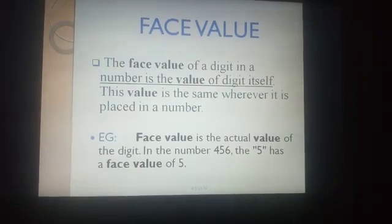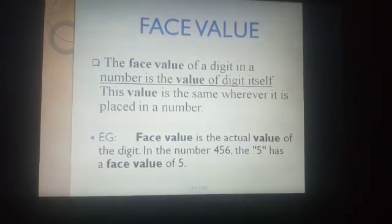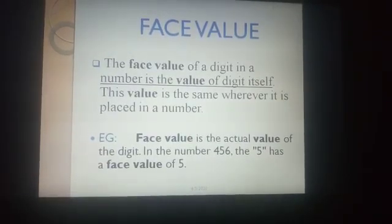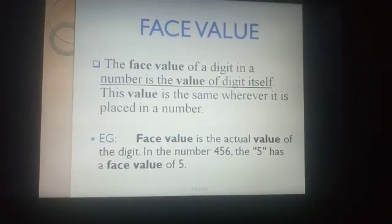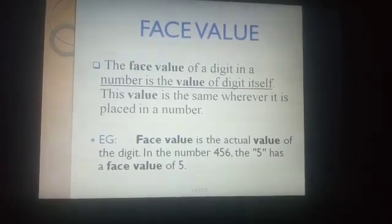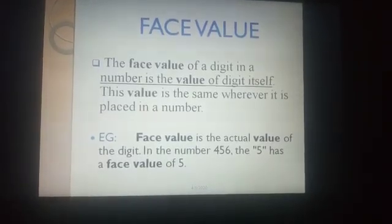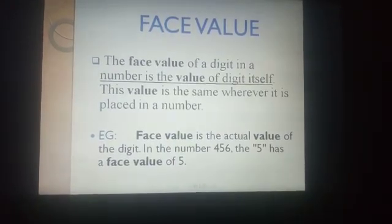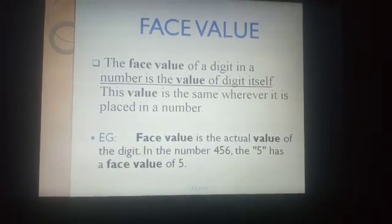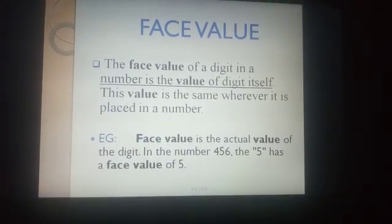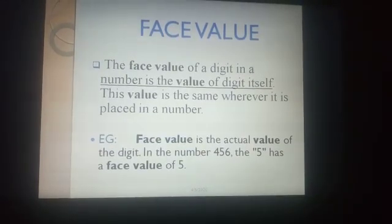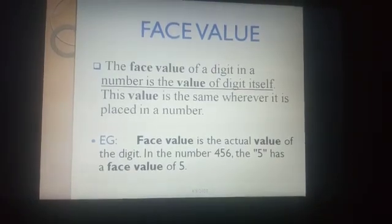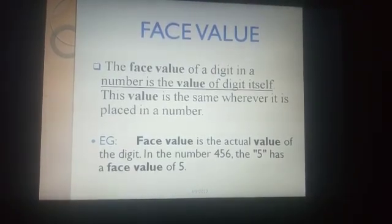Now, face value. Don't be confused, children. Just now we learnt place value — the value of a digit depending upon its place. Face value of a digit in a number is the value of the digit itself, and this value is the same wherever it is placed in a number. For example, in the number 456, the face value of 5 is 5. What is the face value of 4 in 456? The face value of 4 is 4.